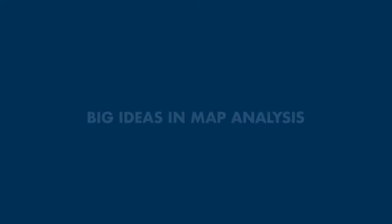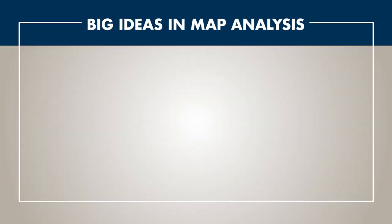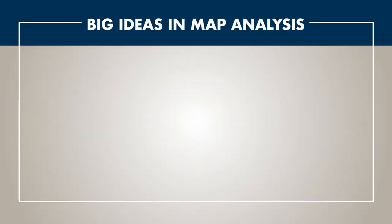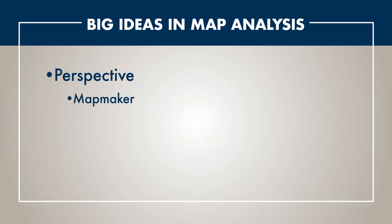There are some great big ideas to start with when you look at any map, whether it was printed yesterday or from hundreds of years ago. The first big idea to think about with any map is perspective. From whose perspective is the map made? Was the map maker a European? Were they Asian, for example?